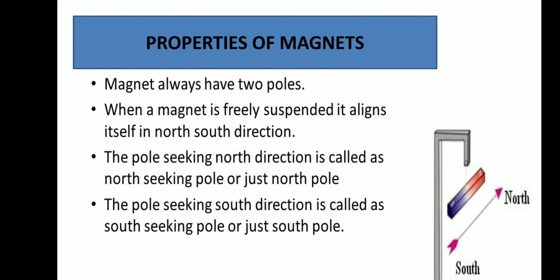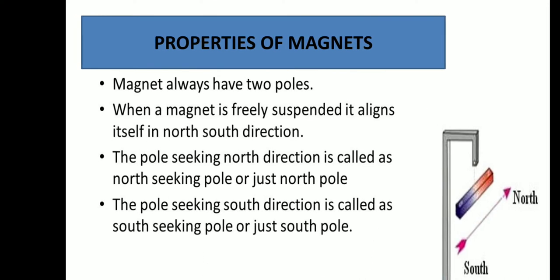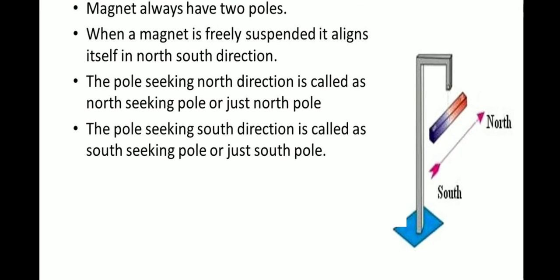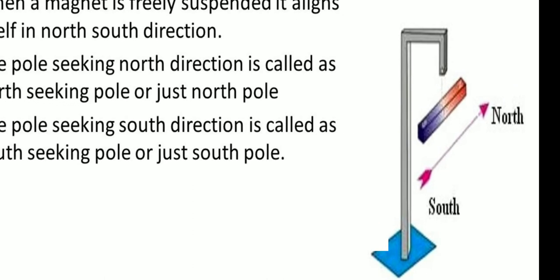Coming to properties of magnets. A magnet always has two poles. When a magnet is freely suspended, it aligns itself in the north-south direction. The pole seeking the north direction is called the north-seeking pole, or just the north pole. The pole seeking the south direction is called the south-seeking pole, or just the south pole. In the picture, you can see the north pole and south pole.